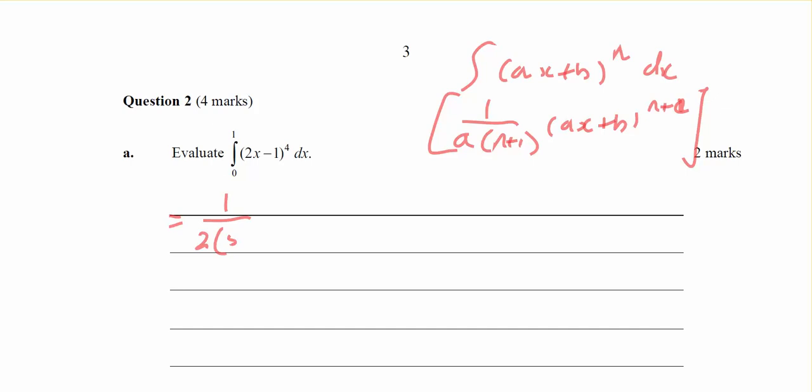And n plus 1 is 4 plus 1 is 5, and then I'm going to have (2x - 1) to the power of 5, from 0 to 1.